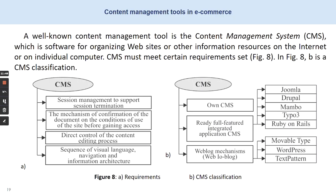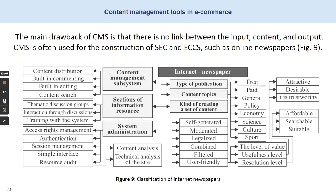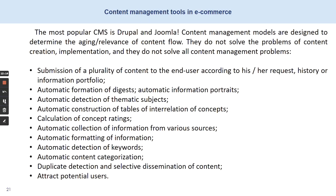A well-known content management tool is the content management system, which is software for organizing web sites or other information resources on the internet or on individual computers. In this slide you can see requirements and a content management system classification. Here you can see a classification of internet newspapers. The most popular content management systems are Drupal and Joomla. Content management models are designed to determine the relevance of content flow, but they do not solve all content management problems.